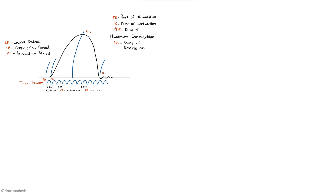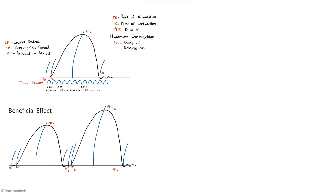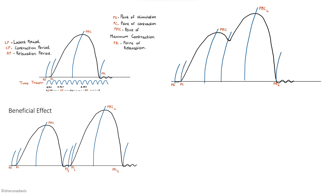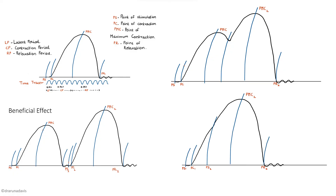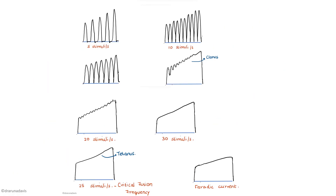In this video we discussed the simple muscle curve, the effect of two successive stimuli including beneficial effect, superposition, and summation, and the genesis of tetanus.